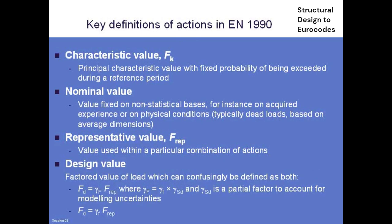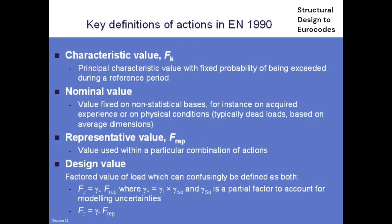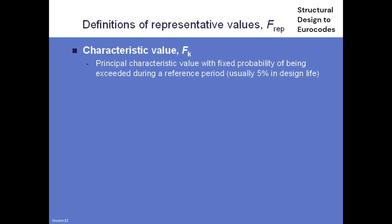Finally, we have a design value, which is basically the representative value multiplied by the load factor. The load factor is gamma_F (upper case), which is made up of gamma_f (lower case) times gamma_sd, where gamma_sd is a partial factor for model uncertainties — very much like gamma_f3 was used previously. In the Eurocodes you will never see gamma_sd separately because it's hidden in gamma_F. The only reason to separate it out is for non-linear analysis. Generally, if you're not doing non-linear analysis, you will only see gamma_F.